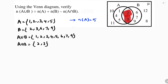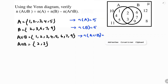Now the cardinal numbers: the number of elements in A is 5, in B is also 5. In A∪B, counting: 1, 2, 3, 4, 5, 6, 7, 8 — there are 8 elements. In A∩B, we have 2 and 3 — so only 2 elements.